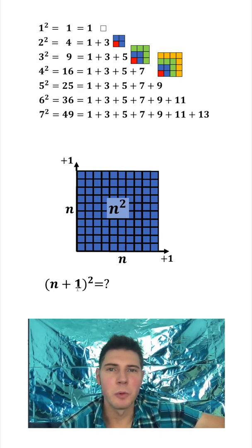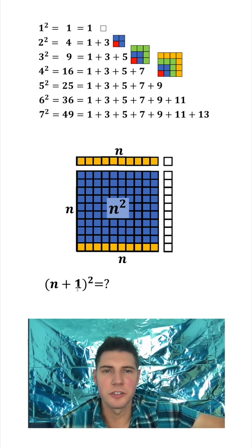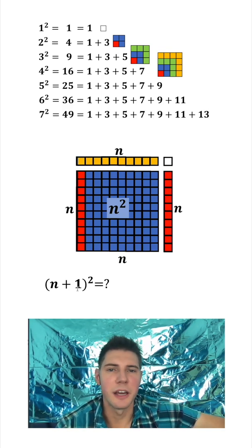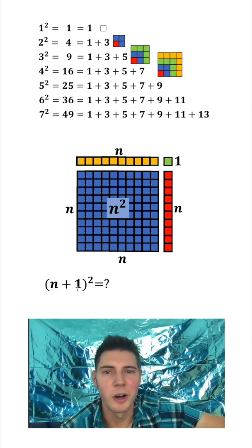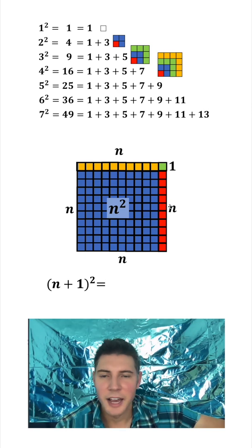Well, the way we get there is we add 1 to both sides and that looks like this. Since this is n, this will also be n, and since this is n, this will also be n, and this guy up here is just a single 1. Then we can smoosh it all together and this right here is the (n + 1)² and it's made up of the n² in the middle, the n on the top, the n on the side, and the 1 in the corner.